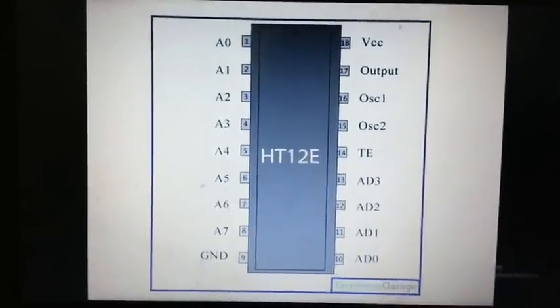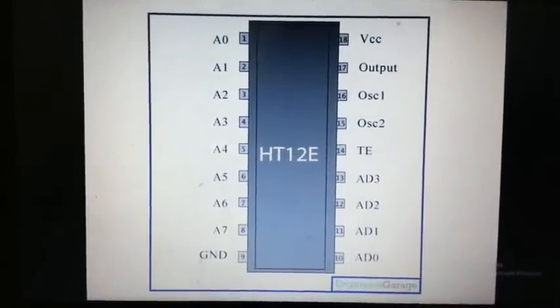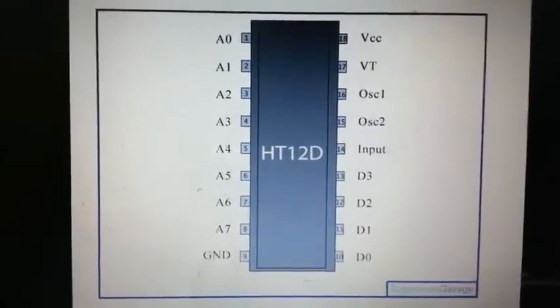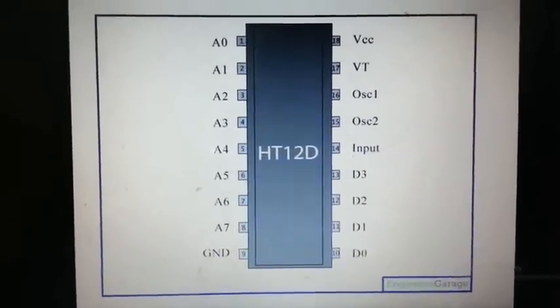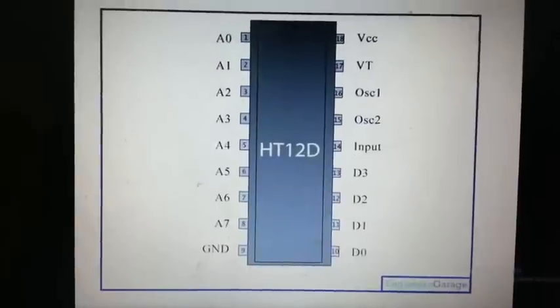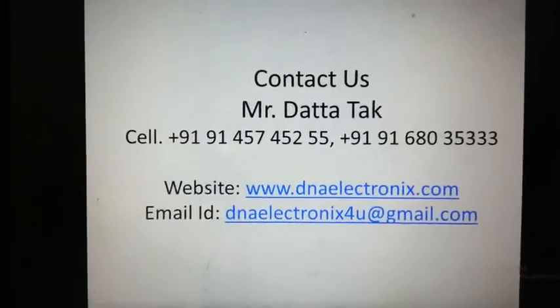This is the encoder IC, HT12E, used at the transmitter side. This is the decoder IC, HT12D, which decodes the data received from the receiver antenna. Thank you very much.